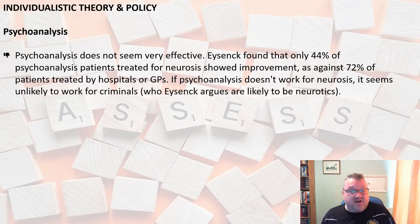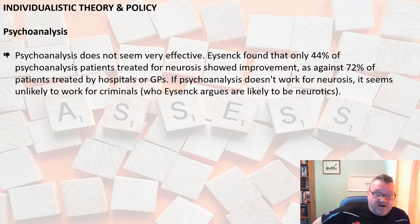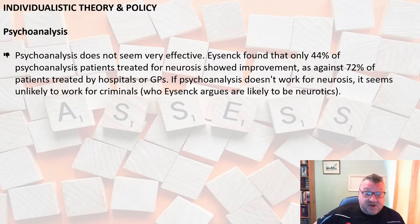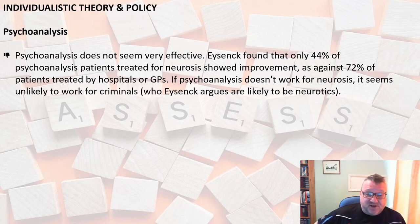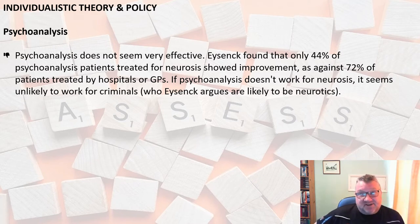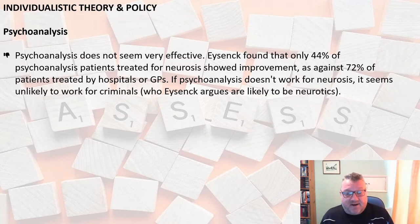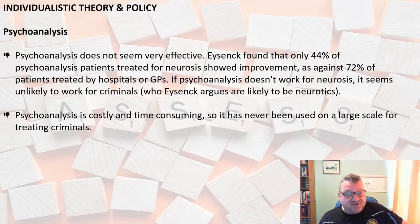Psychoanalysis doesn't seem to be that effective and is hardly used nowadays. Eysenck found that only 44% of psychoanalysis patients treated for neurosis showed improvement, whereas if those patients were treated by a doctor or at a hospital, 72% of them improved. So it would appear that going to a hospital or your GP is probably better than going to a psychoanalyst. Eysenck argued that if psychoanalysis doesn't work for neurosis, it seems unlikely to work for criminals, since Eysenck argued they are neurotic — part of his PEN model. It's also costly and time-consuming, so in reality it's never been used on a large scale for treating criminals.